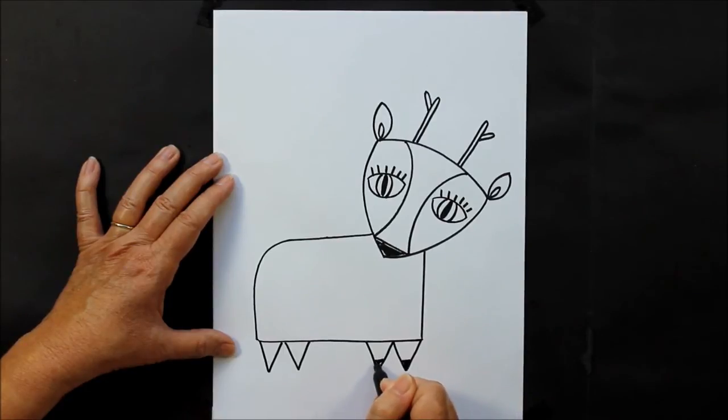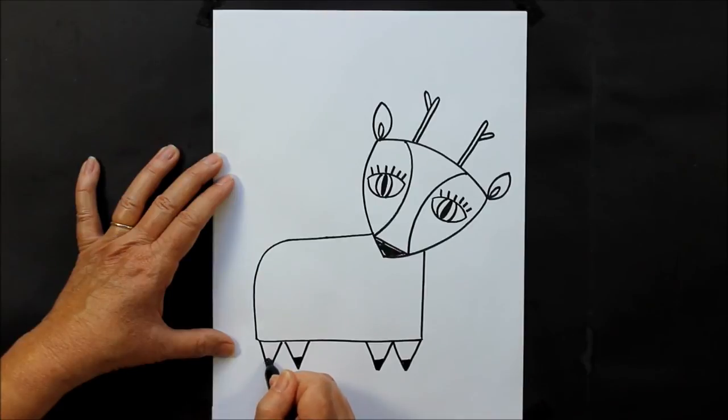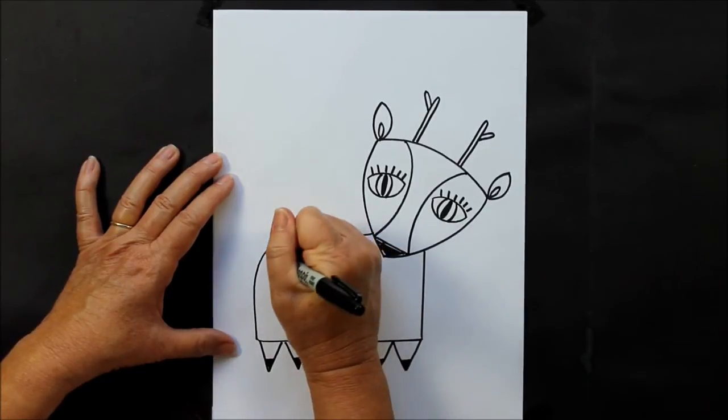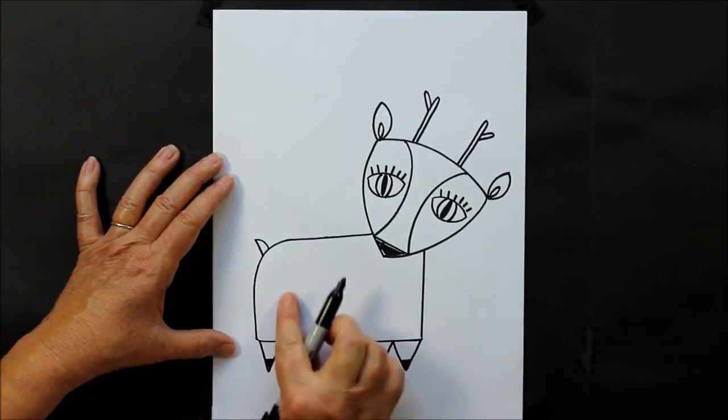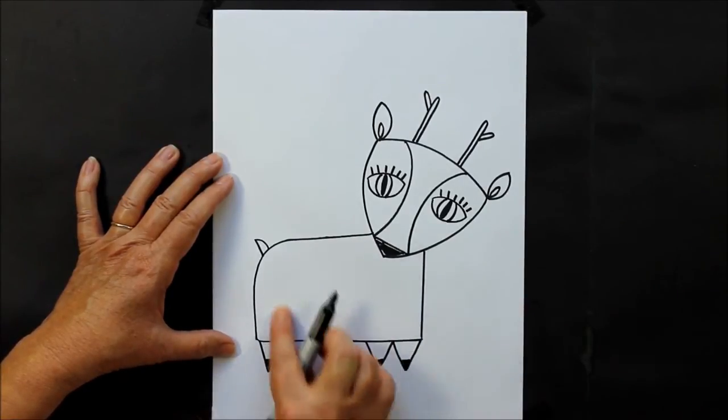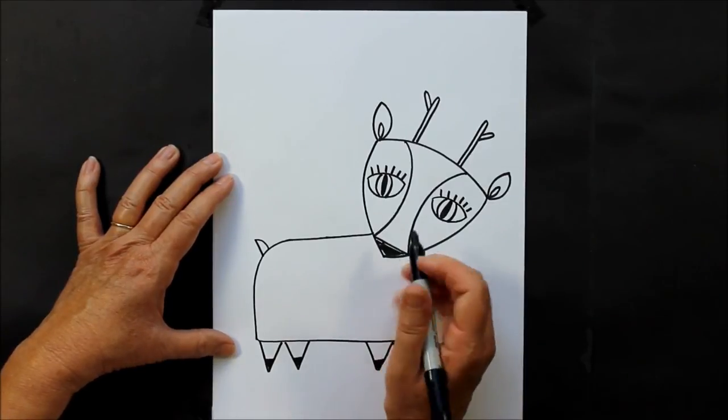Let's put a little tail on her just like that. Now you can fill her body in with some sort of a design. I think I'd like to put a couple, maybe even three diamonds.